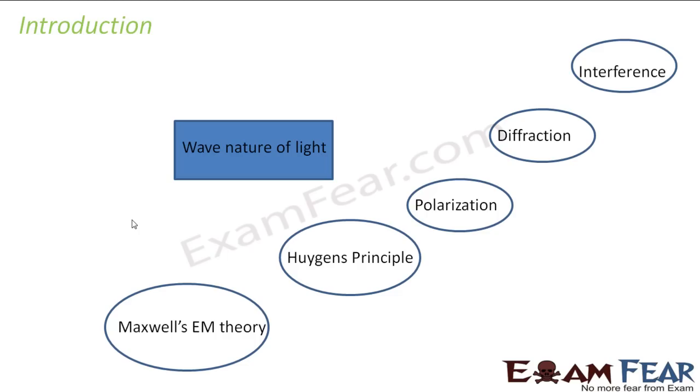And after that came certain experiments like Young's double slit experiment which actually displayed the phenomenon of interference, the diffraction pattern produced by the light waves, the phenomenon of polarization. All these phenomena and principles were able to successfully prove the wave nature of light.